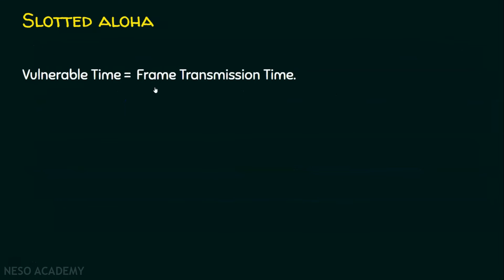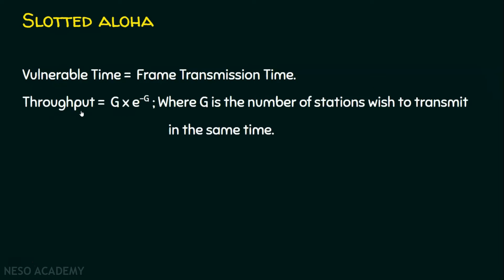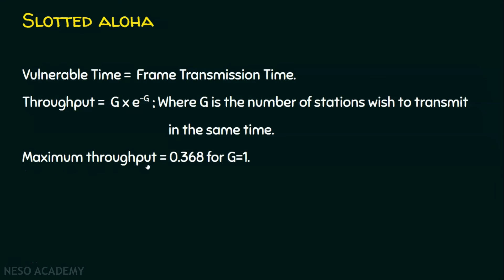Let's see the formulas for slotted aloha. The vulnerable time is the frame transmission time. The throughput is g times e to the power of minus g, where g is the number of stations wishing to transmit at the same time. In pure aloha, the throughput is g times e to the power of minus 2g. The maximum throughput in slotted aloha is 0.368 for g equal to 1, whereas in pure aloha it is 0.184 for g equal to one half.